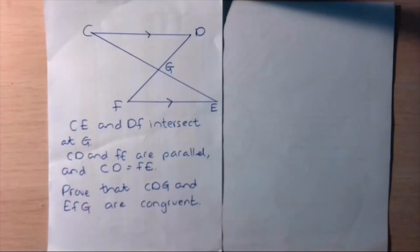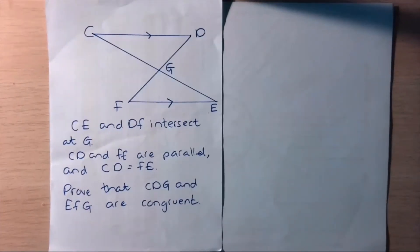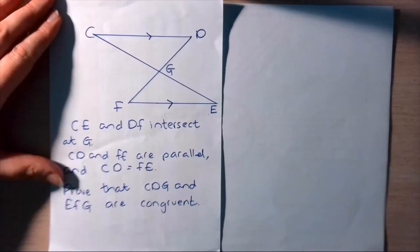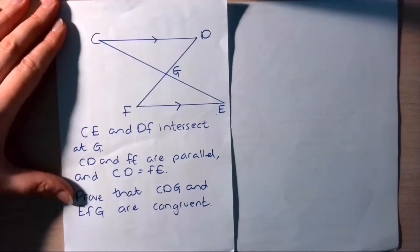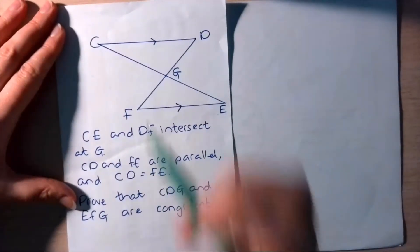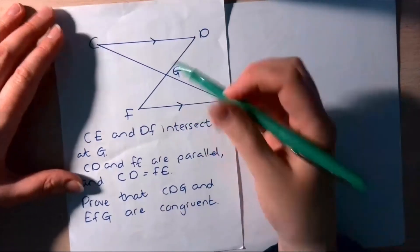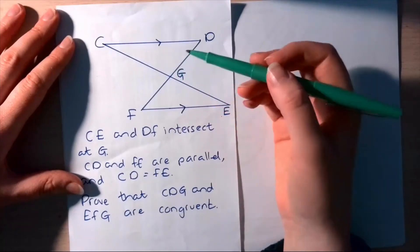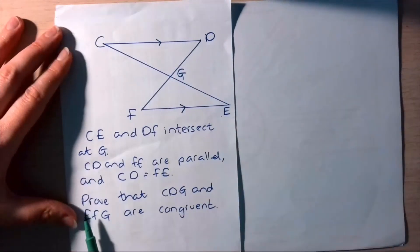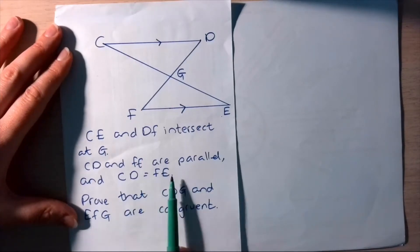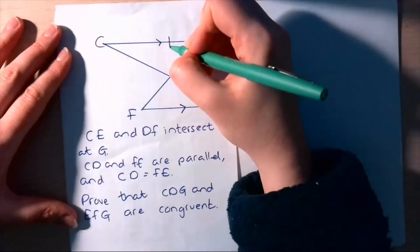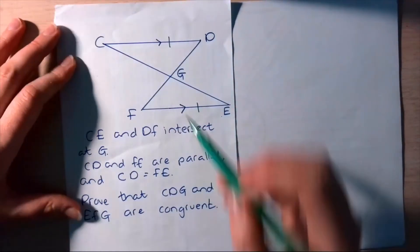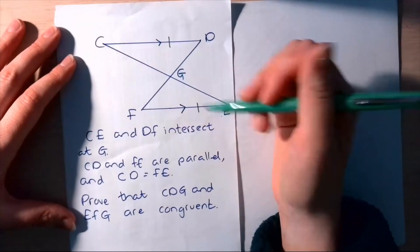The next example: CE and DF intersect at G. CD and FE are parallel, which is already denoted on the drawing by arrows. As soon as you see something about parallel lines, you might start to think about alternate and corresponding angles. CD equals FE — they're the same length — and we're to prove CDG is congruent to EFG.